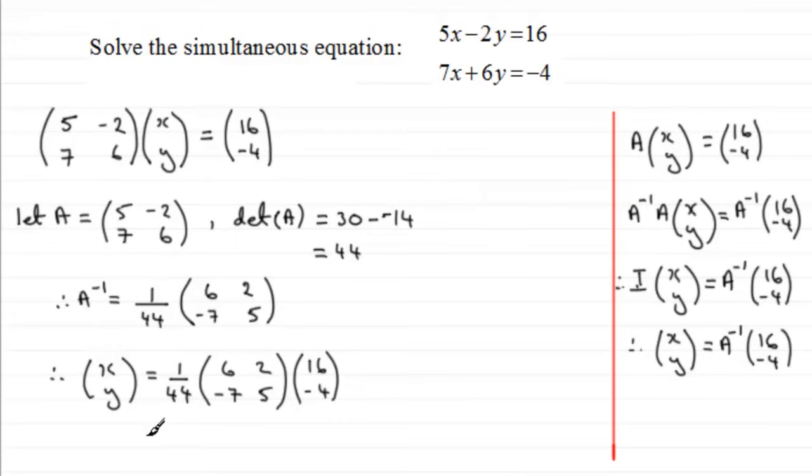And so the first thing I'd want to do now is just leave the 1 over 44 there, and we'll multiply (6, 2; -7, 5) with the (16, -4). That's going to give us a matrix something like this. We're going to do 6 times 16, which is going to be 96, and then add it to 2 times minus 4, which is minus 8. So you've got 96 minus 8, and that gives us 88.